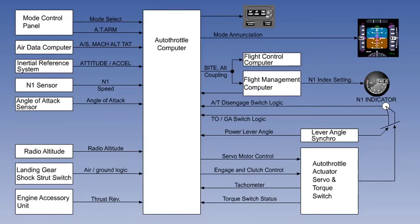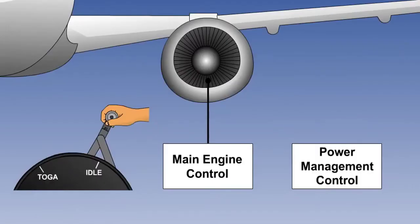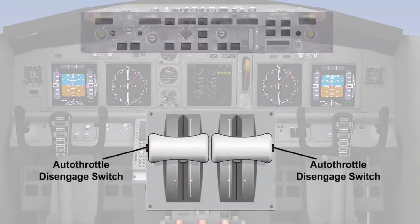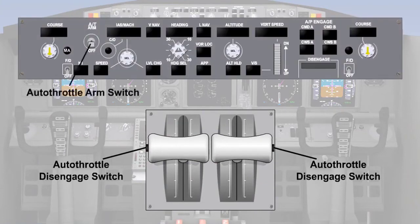During this lesson, you will learn about the autothrottle and its component parts. Then you will learn about the thrust computations made by the autothrottle system and the purpose of the full authority digital engine control system, and the engagement and disengagement criteria.